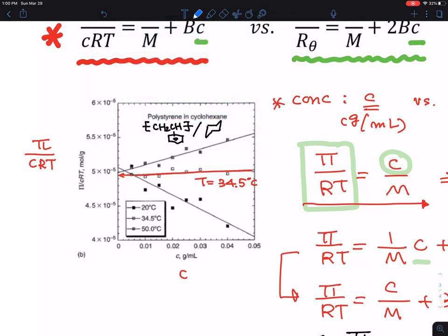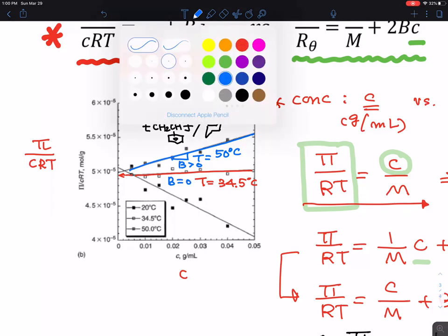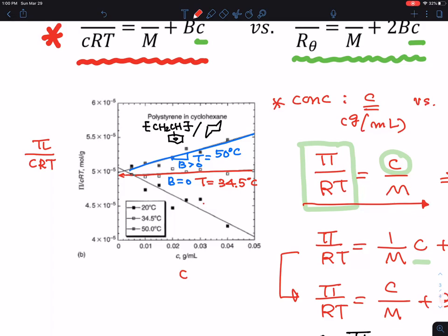But at a higher temperature than 35°C, like 50°C, you get a positive slope. As the equation suggests, the slope here is B, and the B value is positive or zero. If you do the experiment at 20°C, that's the case where the slope is negative.